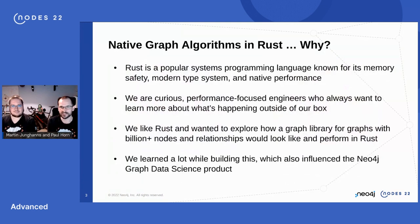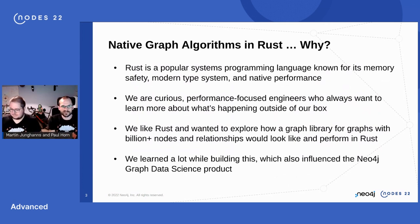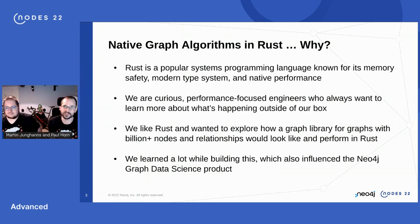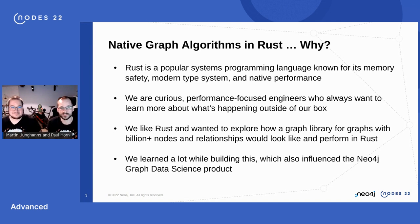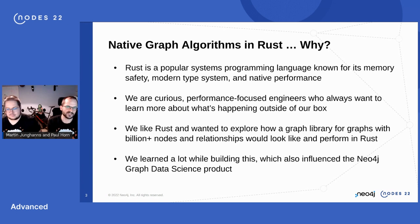Why do we talk about graph algorithms in Rust, since GDS for example is written in Java? First of all, Rust is a very popular systems programming language with some really nice benefits. If you're coming from C/C++, you'll really like the memory safety aspects. Coming from Java, you'll appreciate the modern type system, which is far more expressive, and of course Rust has very nice out-of-the-box performance.